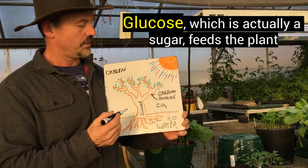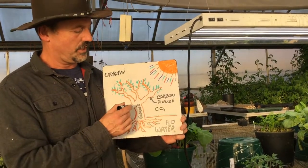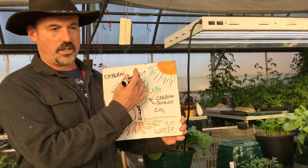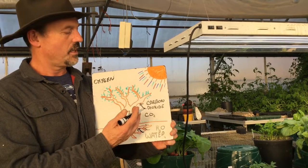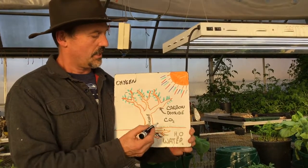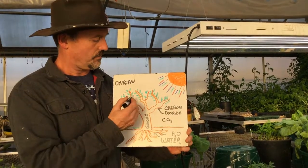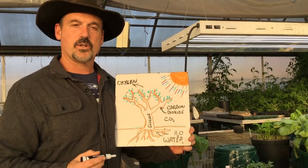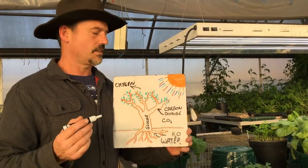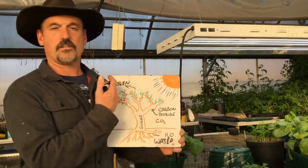That creates glucose — energy or sugar — which is actually a form of sugar stored in the plant. The tree or other plants can store it in the trunk, leaves, or roots; any part of the plant can store the glucose. The waste product from the water after losing an electron is oxygen, which comes out and benefits us as well.